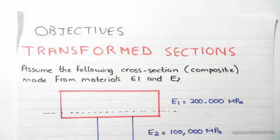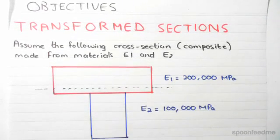A cross-section made from materials with elastic modulus E1 and E2. The first one has an elastic modulus of 200,000 MPa, which is perhaps steel. The second one has an elastic modulus of 100,000 MPa, which could be any material, but this is just an example.